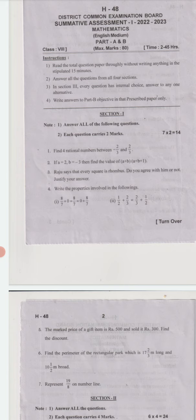Third question is a general question: Raju says that every square is a rhombus. Do you agree with him or not? Justify your answer. Fourth question: write the properties involved in the following. See, first one which property and second one which property? We need to write the name of the property.